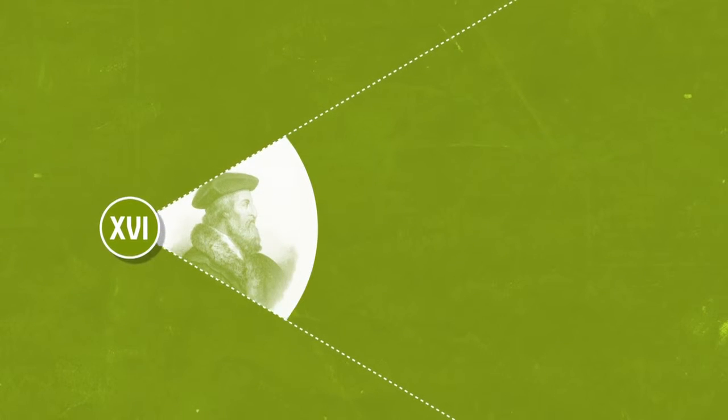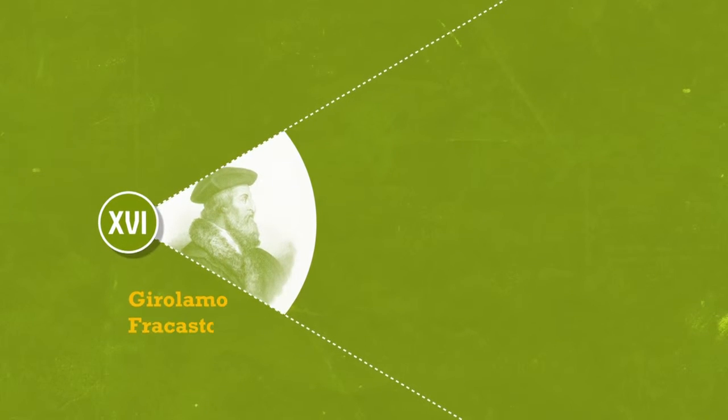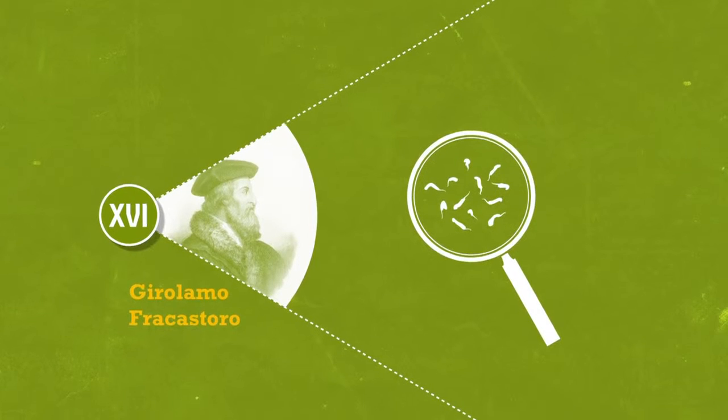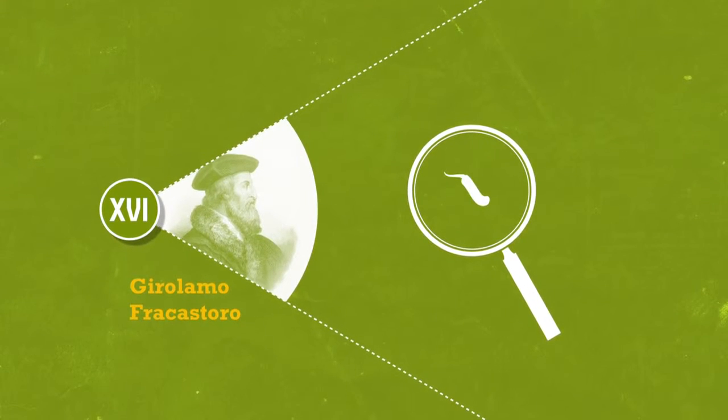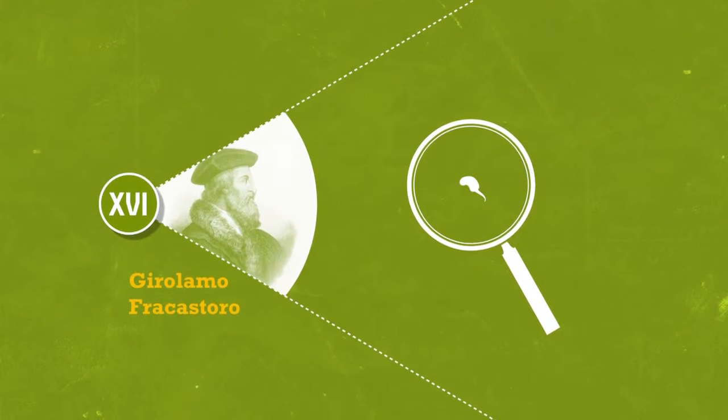In the 16th century, Italian doctor Girolamo Fracastoro proposed the theory that the disease was transmitted by a microorganism invisible to the naked eye.